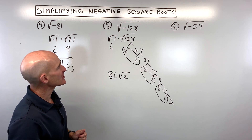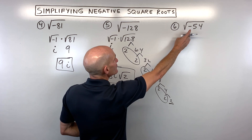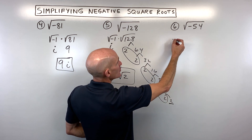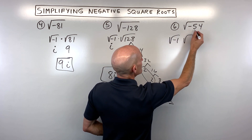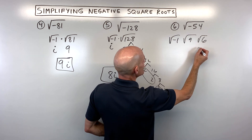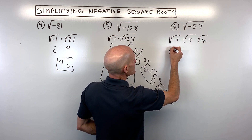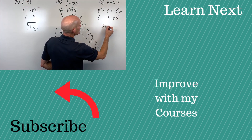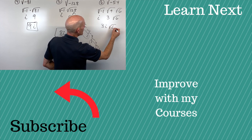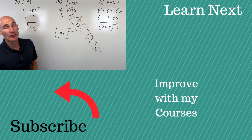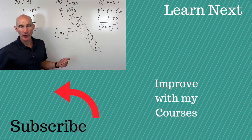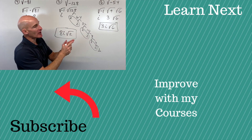Let's try the last example, number 6: the square root of negative 54. Let's try it by pulling out perfect squares. 54 is 9 times 6. Square root of negative 1 is i for imaginary; the square root of 9 is 3; and we have the square root of 6 left over. We generally write the number first, the i second, and then the radical. So the final result is 3i square root of 6. Great job! If you want more examples or want to see another video on simplifying square roots, check out the video linked here.